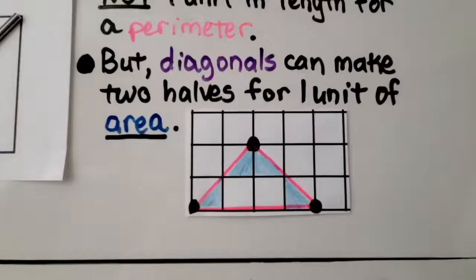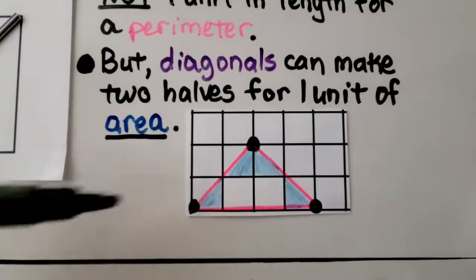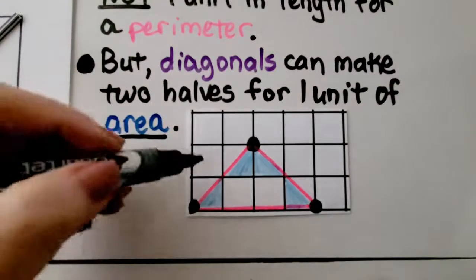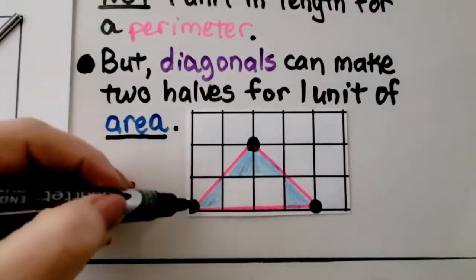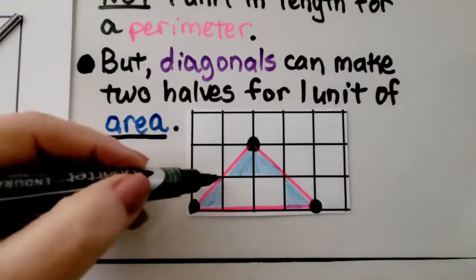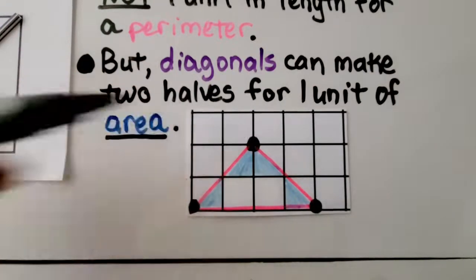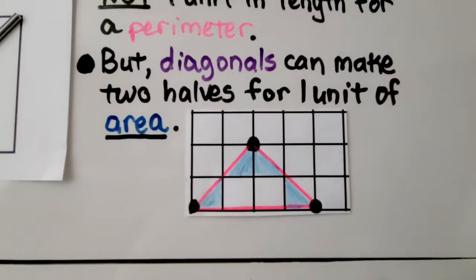All the examples and walkthroughs we did for perimeter didn't have diagonal lines. We always went up and then over — none of them had diagonal lines for the perimeter. We'll get into that later on in higher levels of math.